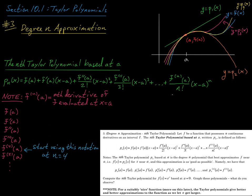I want to remind you of something from the last video. If you look at the first three terms of pn(x), those first three terms are really p2(x) that we built in the last video. Where do those coefficients — f(a), f′(a), and f″(a)/2! — come from? They came from the conditions we wanted to place on the parabola p2(x) so that it would be a good approximator to our blue curve near x = a.